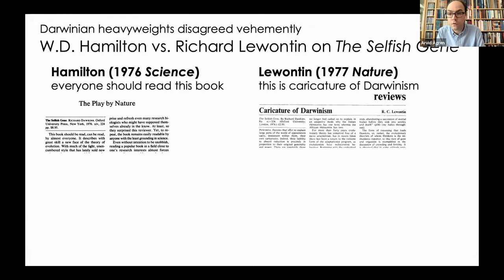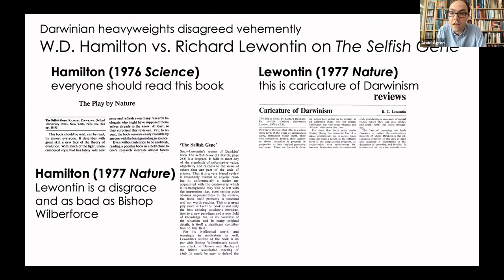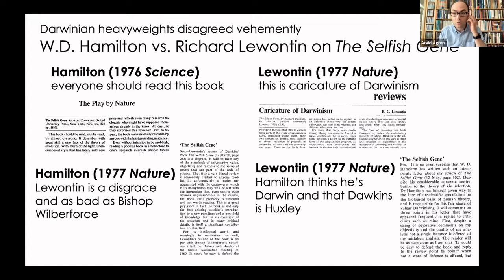Whatever merit there may be in Lewontin's argument, the tone of his review was such that Hamilton wrote to the editor of Nature to protest, describing Lewontin's review as a disgrace and comparing his behavior to that of Bishop Wilberforce, who famously debated Thomas Henry Huxley at the British Association in Oxford over Darwin's theory. This exchange ended with Lewontin also writing to the editor of Nature, telling Hamilton to calm down, saying that Hamilton thinks he's Darwin and that Dawkins is his Huxley.